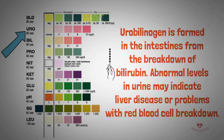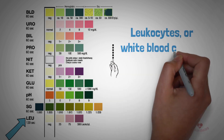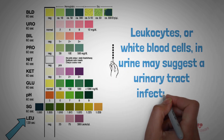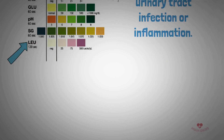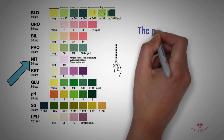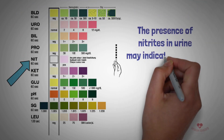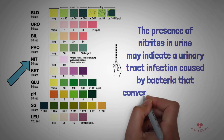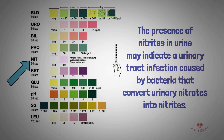Leukocytes, or white blood cells, in urine may suggest a urinary tract infection or inflammation. The presence of nitrites in urine may indicate a urinary tract infection caused by bacteria that convert urinary nitrates into nitrites.